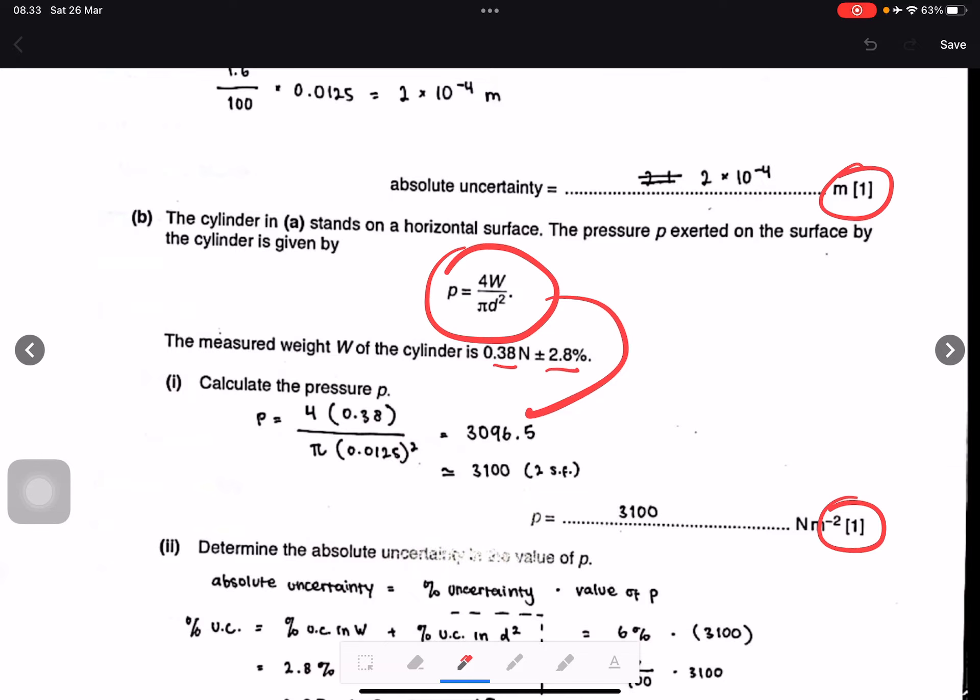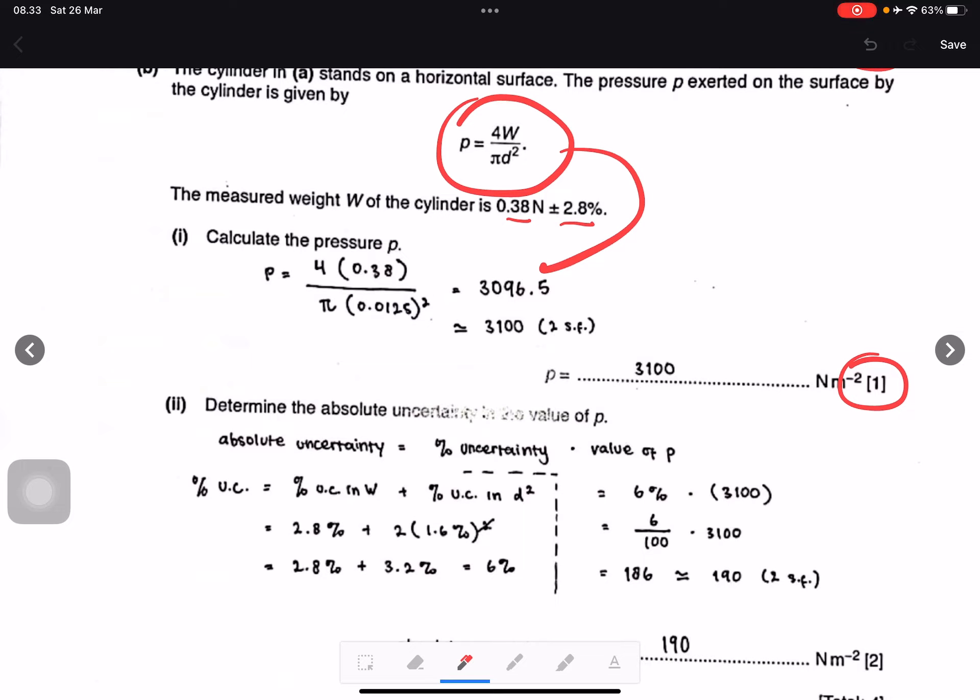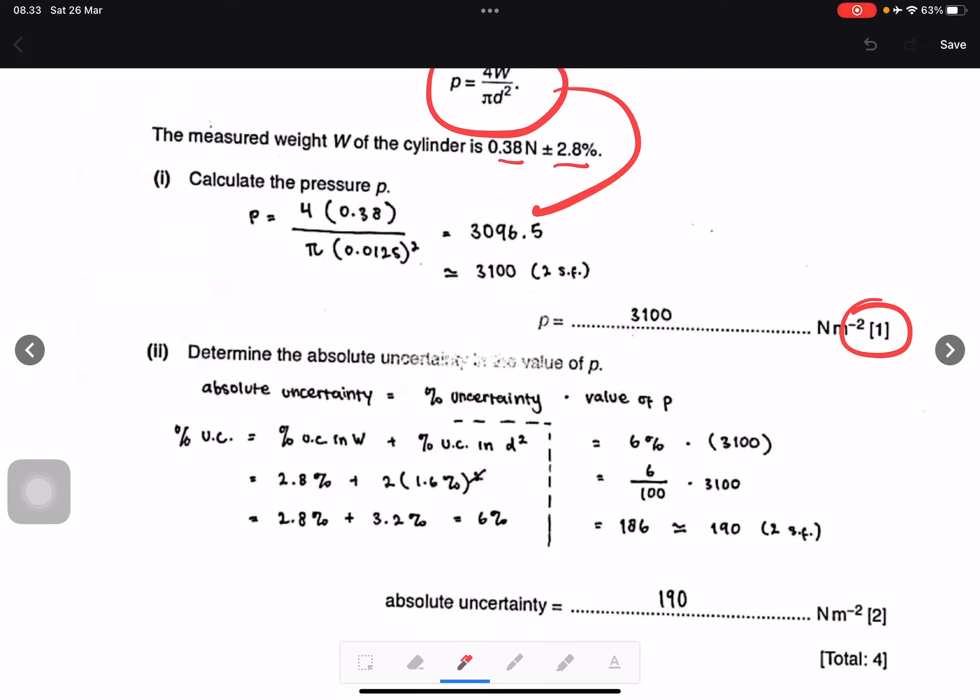Question C: Determine the absolute uncertainty value of P. This is percent in W and also percent in D squared. This is correct: 2.8 plus two times 1.6 percent, because they have power of two. So we get 6 percent.